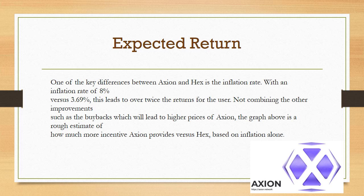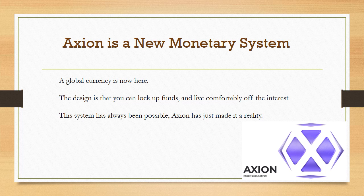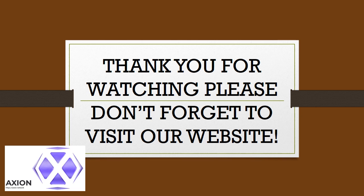One of the key differences between Axion and HEX is the inflation rate. With an inflation rate of 8% versus 3.69%, this leads to over twice the returns for the user, not combining the other improvements such as buybacks which will lead to higher prices of Axion. The graph above is a rough estimate of how much more incentive Axion provides versus HEX based on inflation alone. Axion is a new monetary system — a global currency is now here. The design is that you can lock up funds and live comfortably off the interest. This system has always been possible; Axion has just made it a reality. Thank you for watching — please don't forget to visit our website.